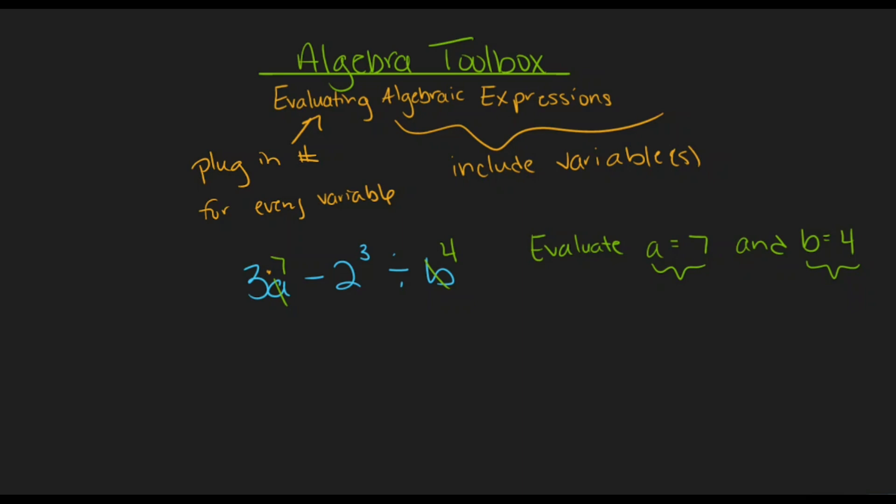smushing those two numbers next to each other does not necessarily show multiplication. It makes it look like the number 37. So I have to remember to show multiplication between these two steps. That means that I can now represent this expression as 3 times 7, the value we plugged in for a, minus 2 to the third, divided by 4, the value we had plugged in for b.